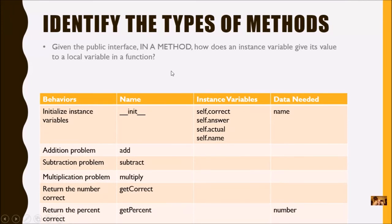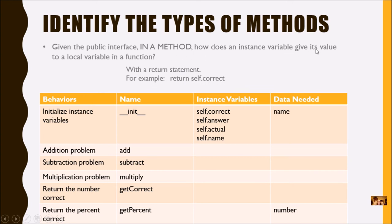Given this public interface, in the method, how does an instance variable give its value to a local variable? Remember, these are private. If the method wants to share the value back to the function, it has to use a return statement — for example, return self.correct.